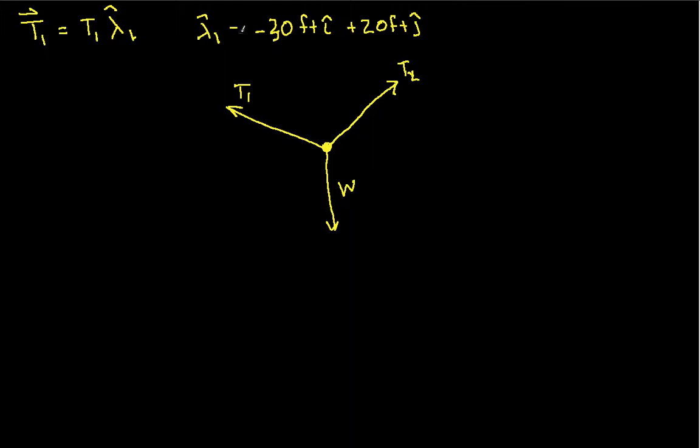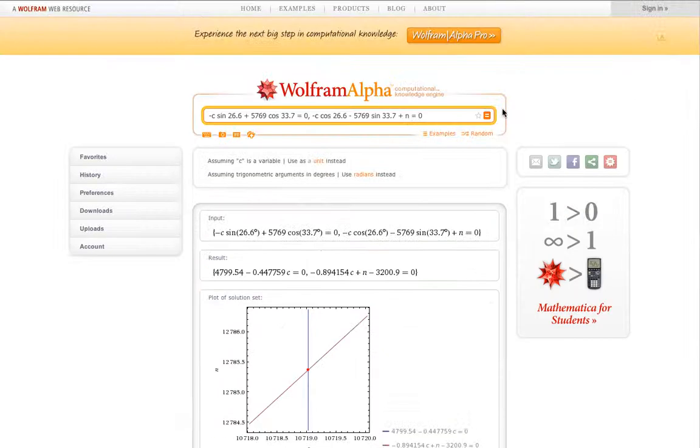We can actually get this unit vector, lambda hat one, as being equal to this divided by the square root of 30 feet squared plus 20 feet squared. So we just made a mess there, but hopefully you can see what I'm doing. And so I can work this out, rather than actually work it out in gory detail, I'm going to sort of cheat and have Wolfram Alpha do it for me.